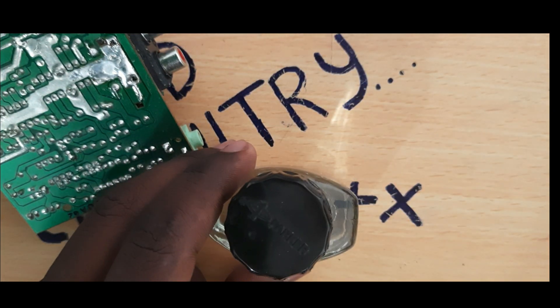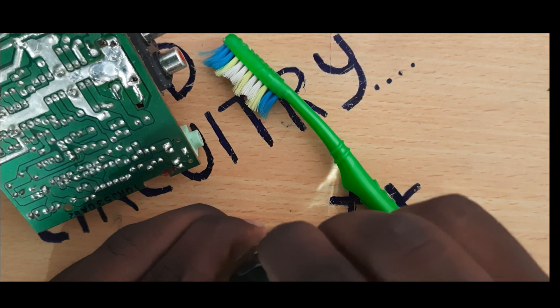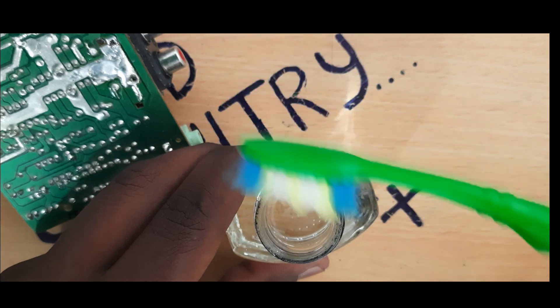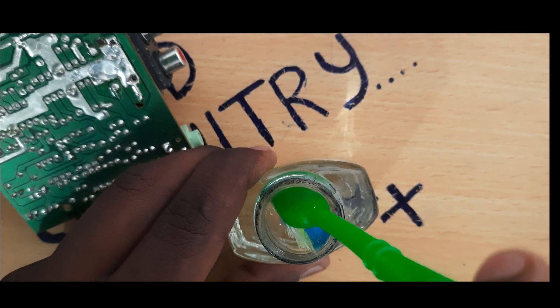Now, I am going to clean the board. Take a brush and dip it into the thinner. After that, clean the board where you have applied more flux.